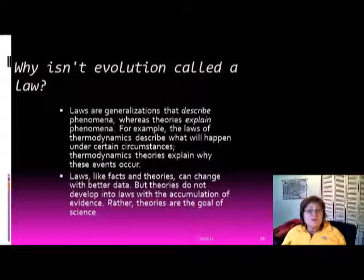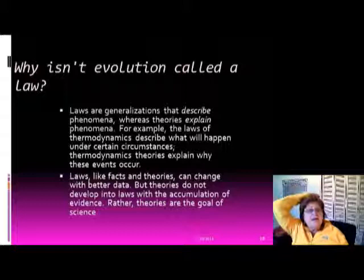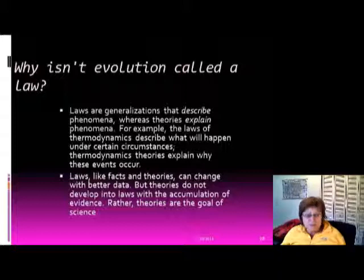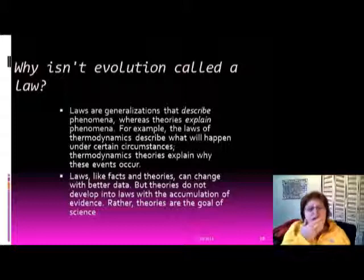Why is evolution called a theory and not a law? Laws are generalizations that describe phenomena, whereas theories explain phenomena. For example, the laws of thermodynamics describe what will happen under certain circumstances, while thermodynamic theories explain why those events occur. Laws, like facts and theories, can change with better data, but theories do not develop into laws — rather, theories are the goal of science.